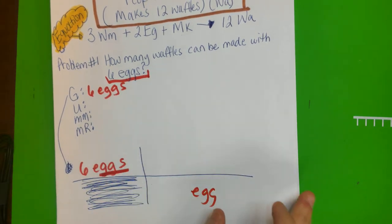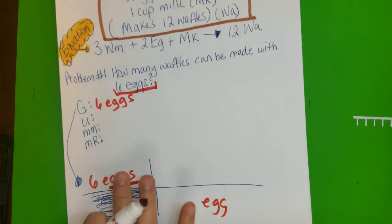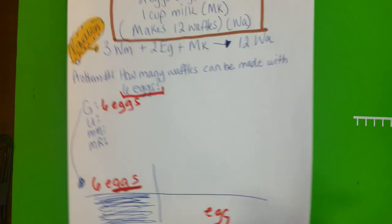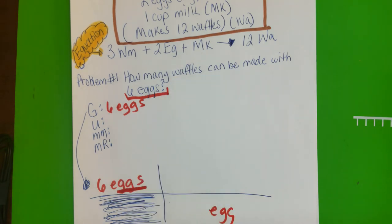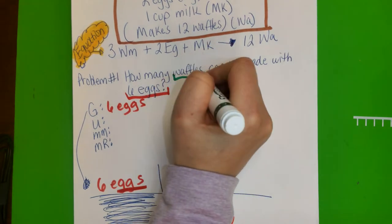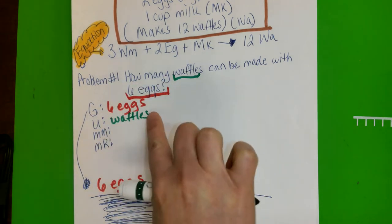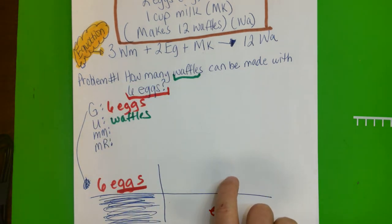Okay, so anyways what is the unknown? The unknown is gonna be waffles, so obviously we're gonna end up with waffles here.